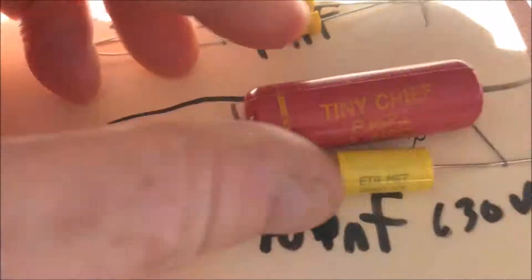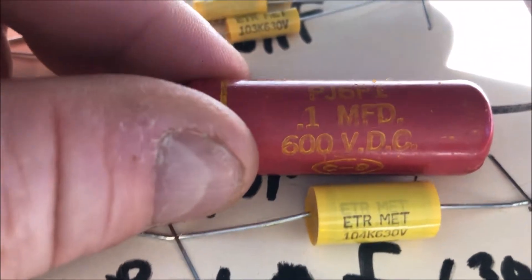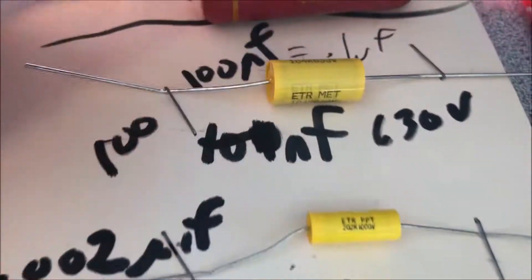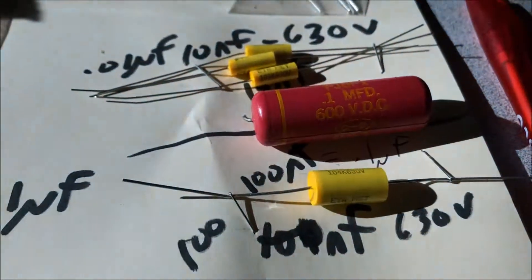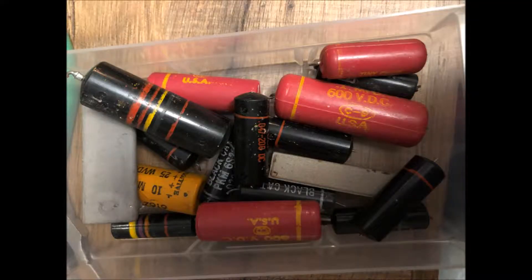What's kind of funny, here's the first one. The Tiny Chief 1 microfarad is replaced by this little tiny thing here, which is actually 630 volts. Here's all the old capacitors I took out.